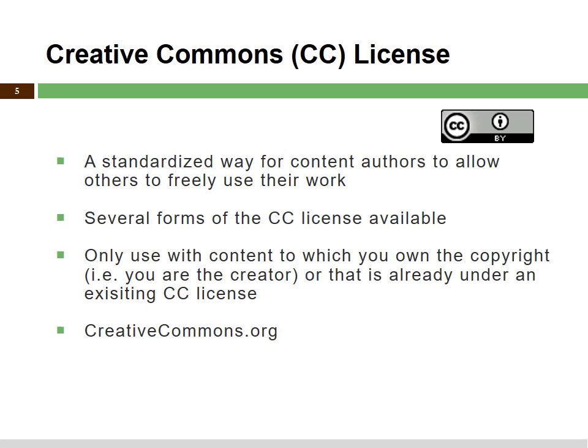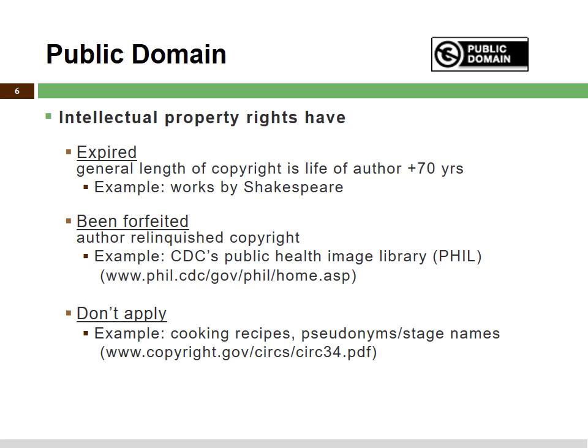If you want more information on Creative Commons licenses, you can go to their website at creativecommons.org. An item that falls under the public domain is identified as something in which its intellectual property rights have expired, been forfeited, or they don't apply. An example of expired intellectual property rights would be a case where the original author has passed away, because the copyright doesn't stop there. The copyright is good for the life of the original author plus 70 years beyond that author's date of death. For example, works by Shakespeare are now in the public domain.